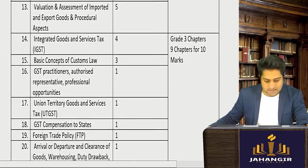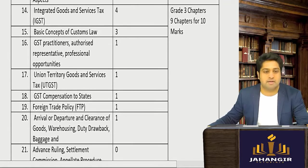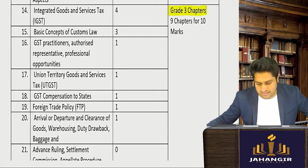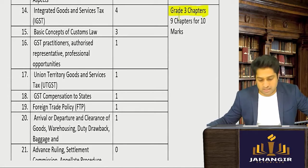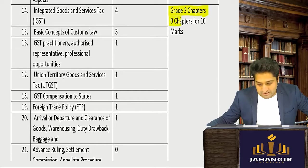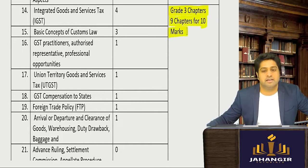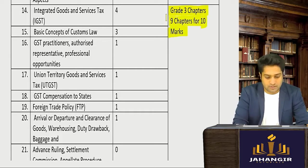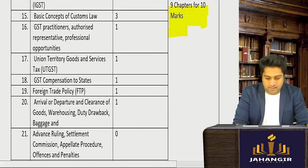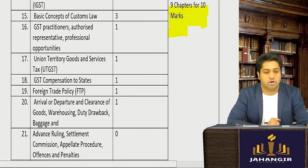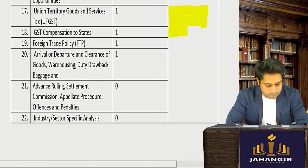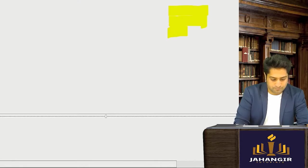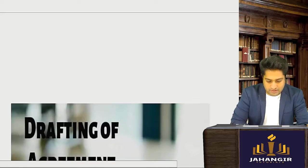If we see the grade two chapters, there are seven chapters which come for around 40 marks. Then for grade three chapters, in past examinations, nine chapters come for only around 10 marks. This is the further distribution — you can take a screenshot.